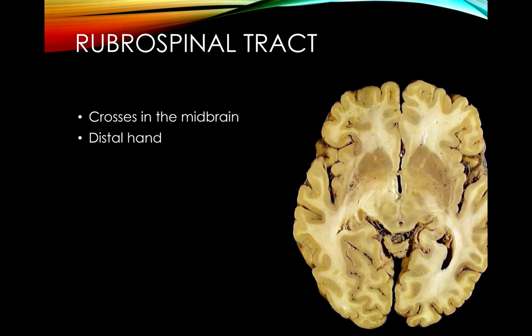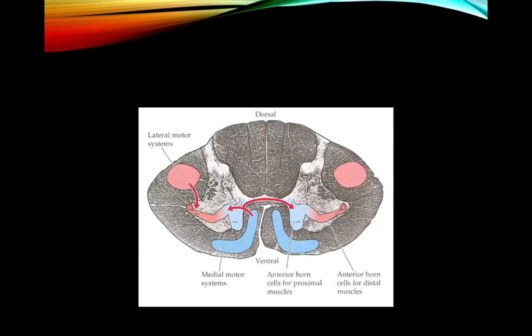The rubrospinal tract does essentially the same function as the lateral corticospinal tract, though it is much less important. It originates from the red nucleus in the midbrain and also emphasizes control of the hand. Together, the lateral corticospinal tract and rubrospinal tract form the lateral motor system, supplying anterior horn cells with an emphasis on arm and hand control.